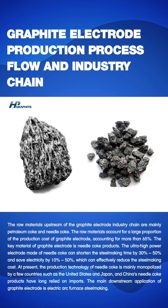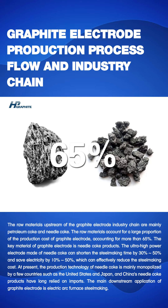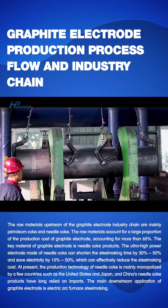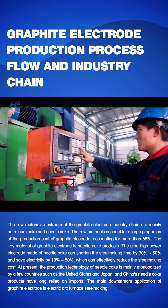The raw materials upstream of the graphite electrode industry chain are mainly petroleum coke and needle coke. Raw materials account for a large proportion of the production cost of graphite electrode, accounting for more than 65%. The key material of graphite electrode is needle coke.